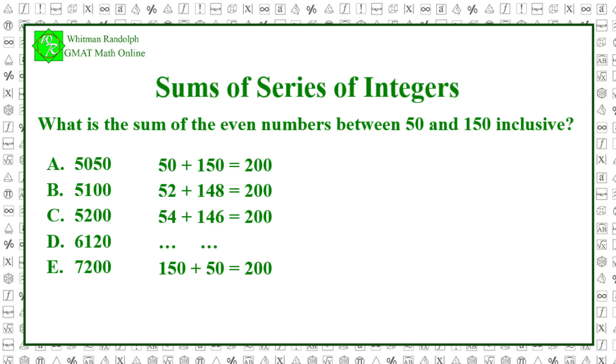Because there are 51 even numbers, there are 51 sums, each equal to 200. So the total sum is 51 times 200 divided by 2, which equals 51 times 100 and that equals 5100. So the correct answer is B.